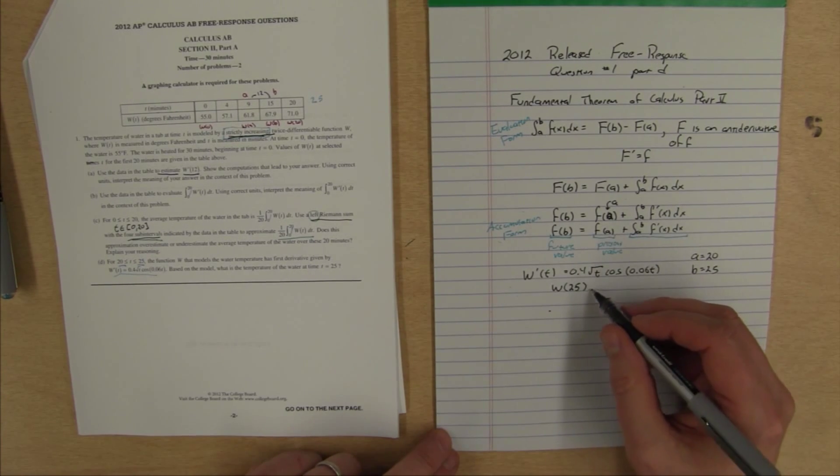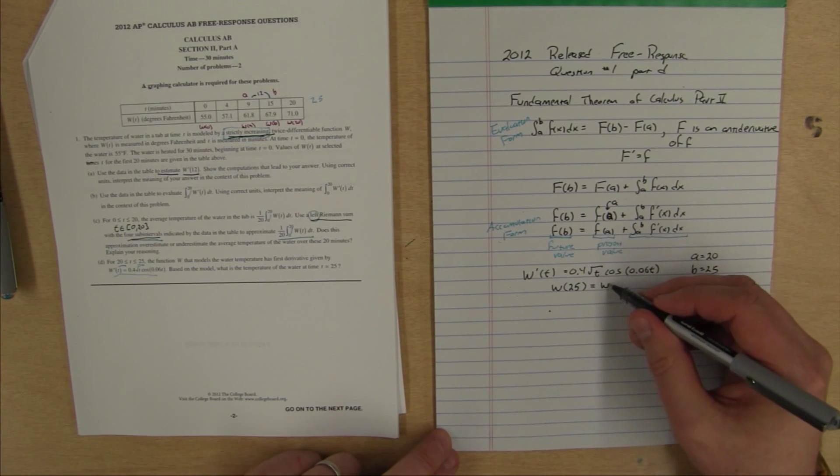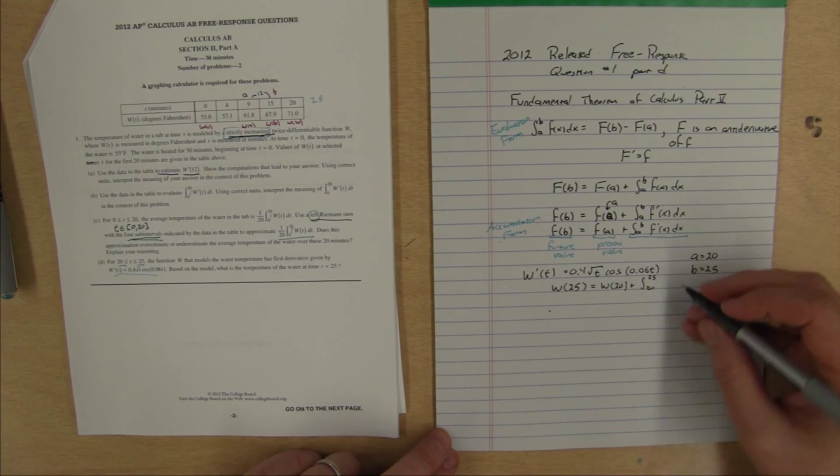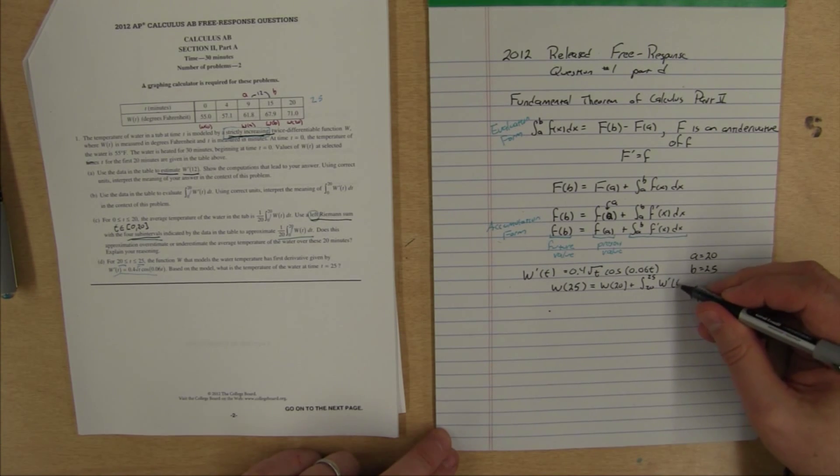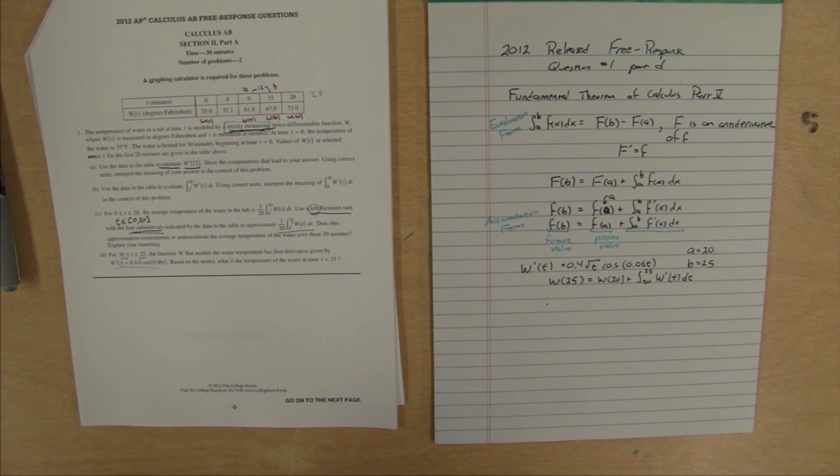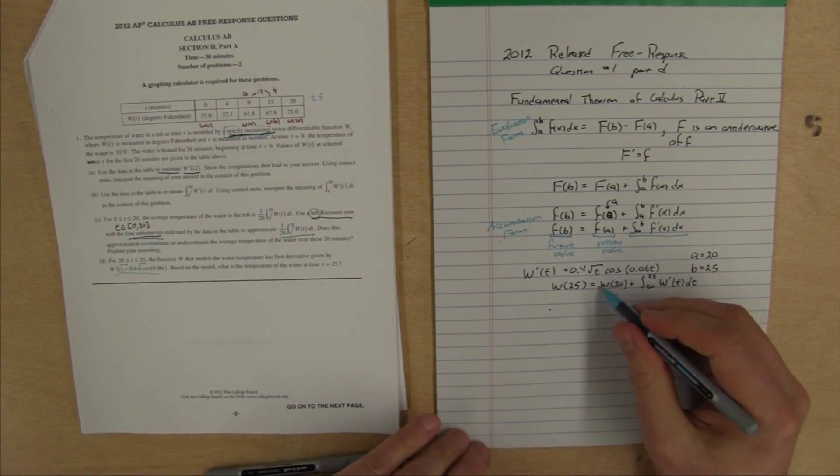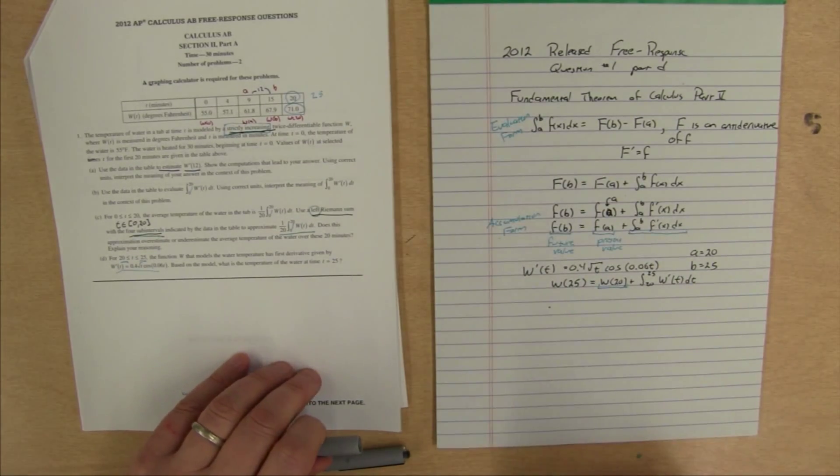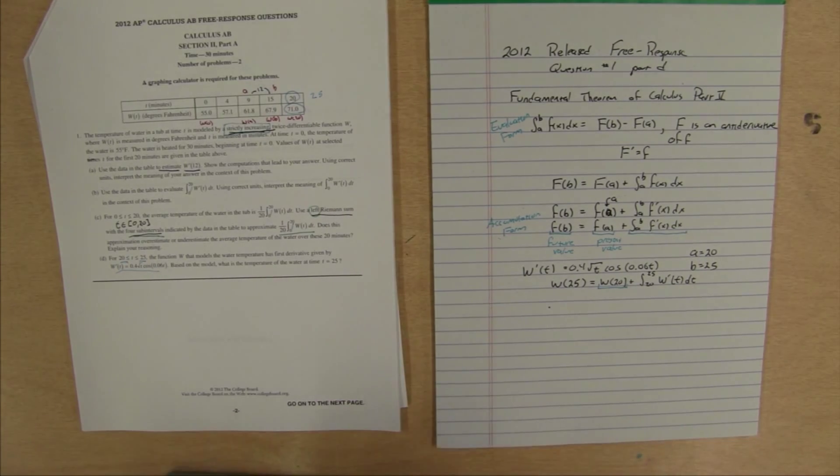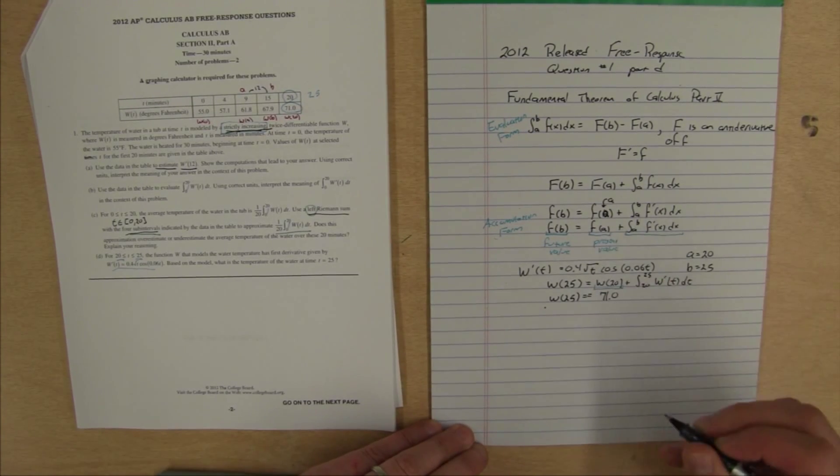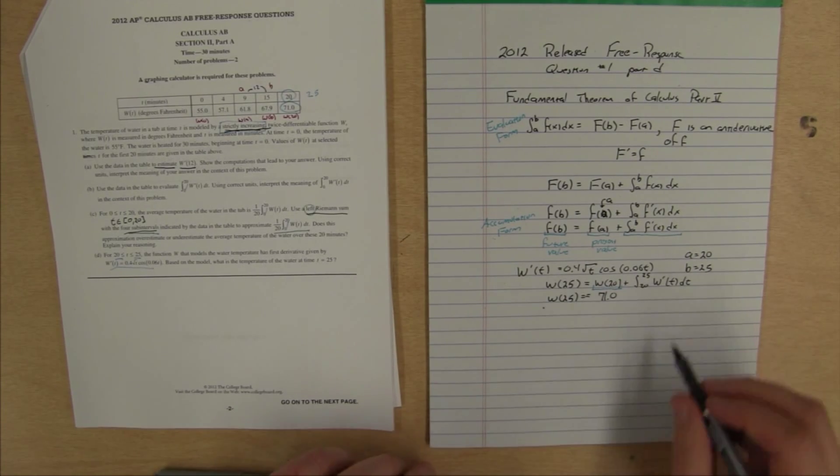Our f of b, that's the w of 25. That equals our a is 20, so that's w of 20 plus the integral from a to b. That's the integral from 20 to 25 of f prime of x. For our problem, that's w prime of t dt. We know what w of 20 is because that's on our chart. When t is 20, w of t is 71. So we know that w of t is 71.0. This w of 25 is what we're trying to get a handle on.